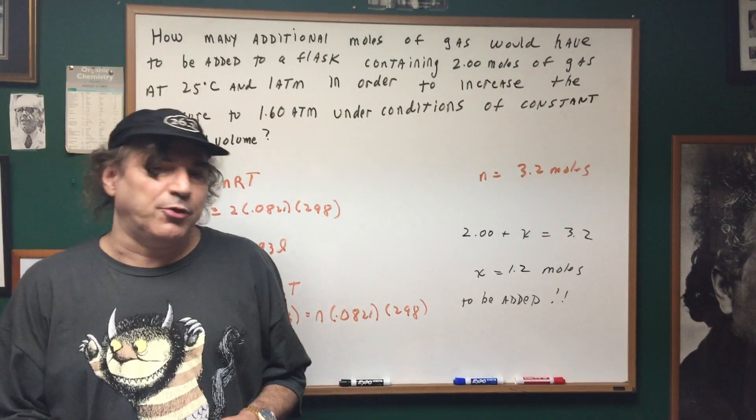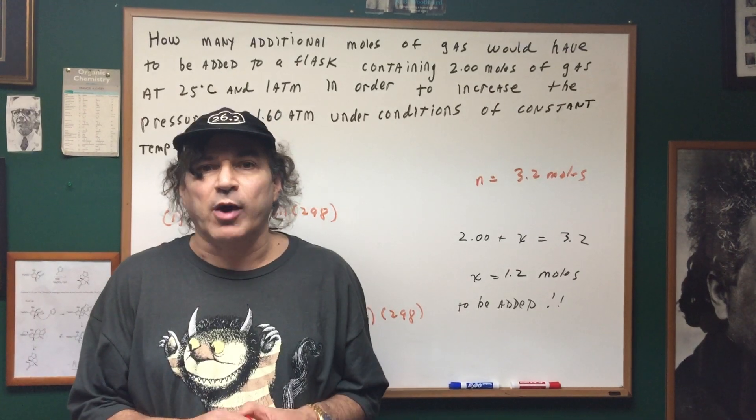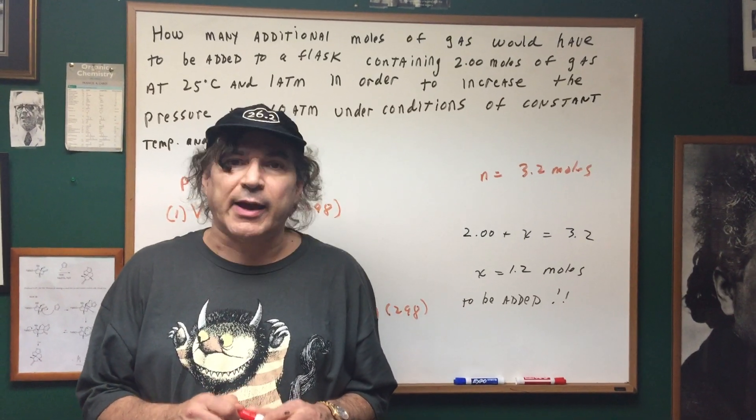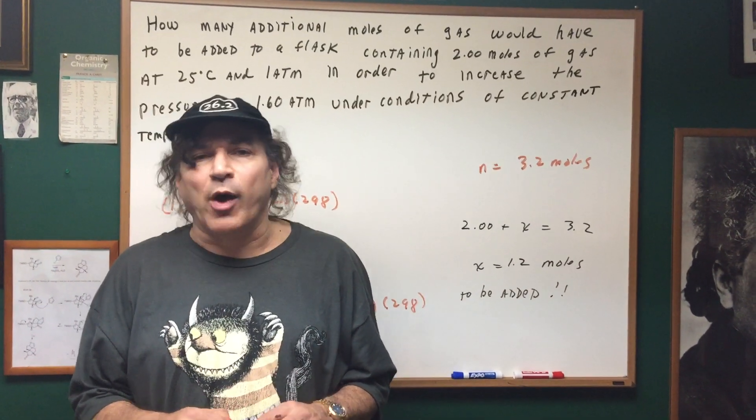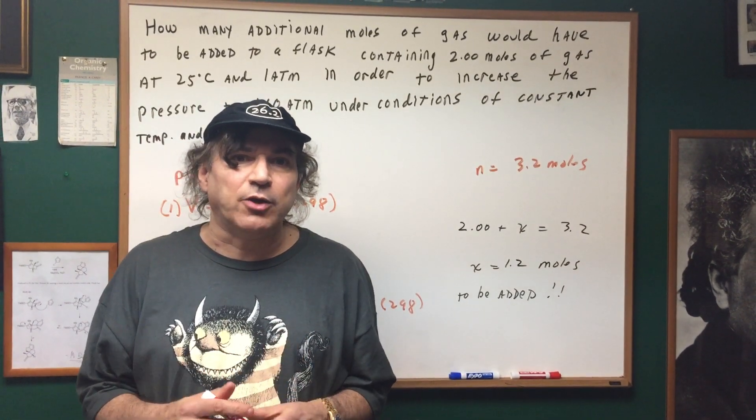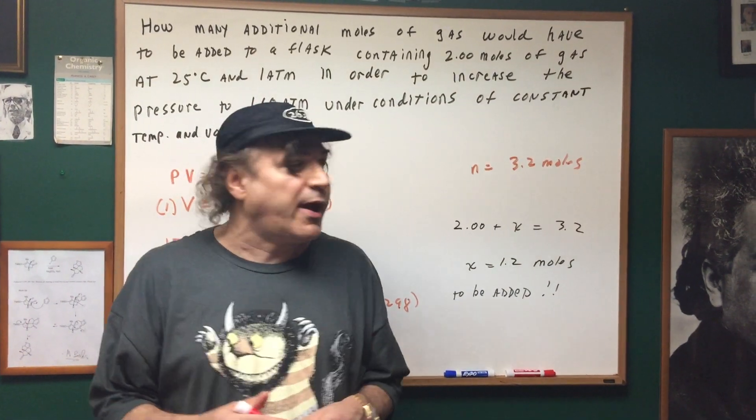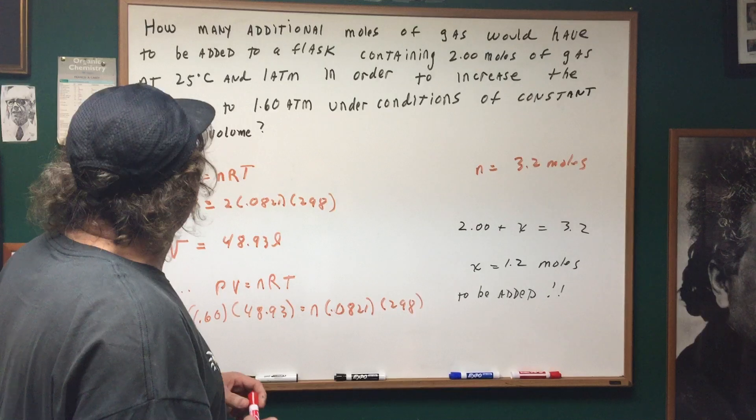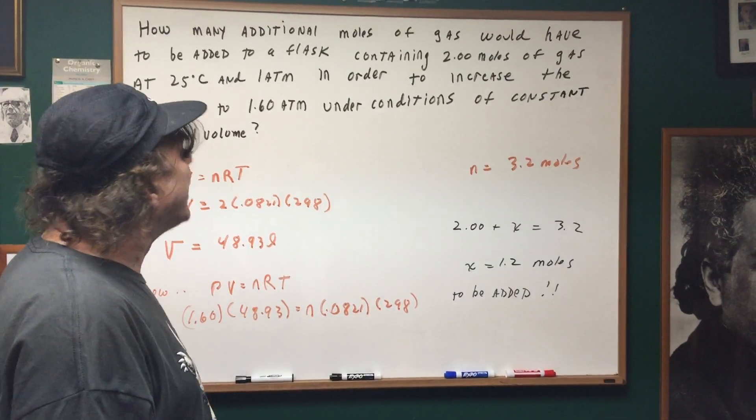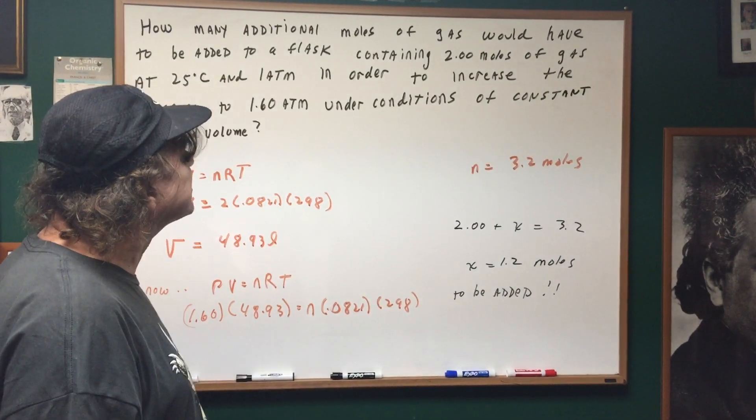Hi, I'd like to go over a problem with you today, a challenge question on the ideal gas law. This is a hard question, but I want to see if we can explore it together. It says here: How many additional moles of gas would have to be added to a flask